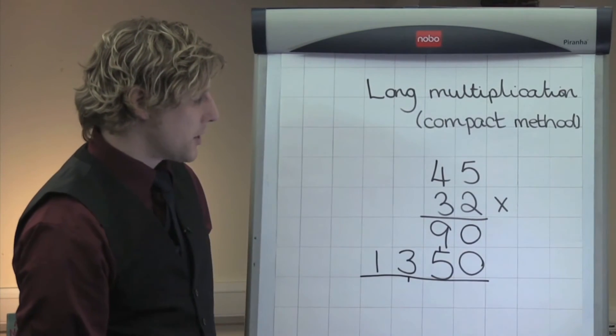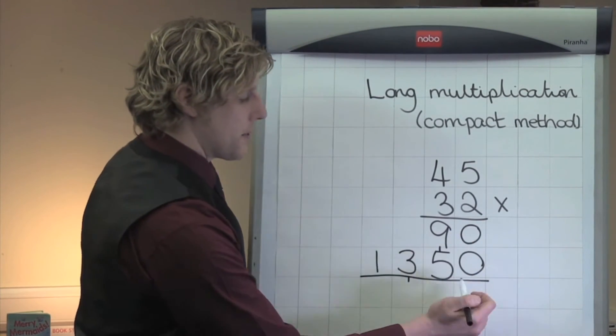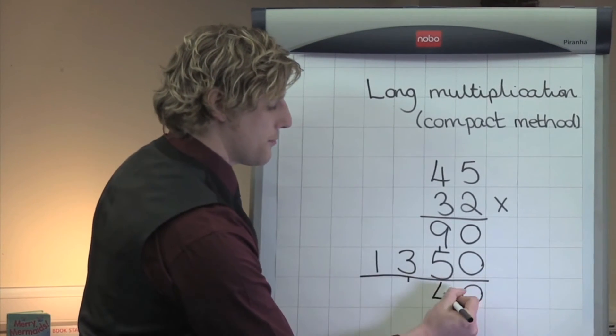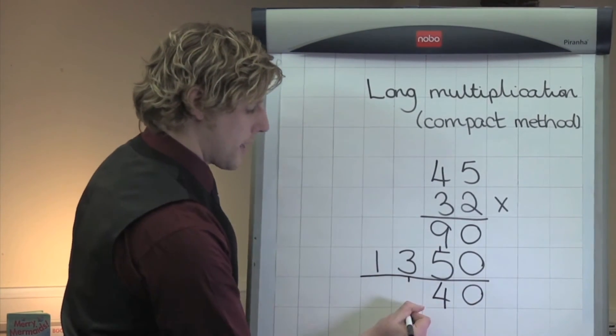Finally, I just need to add my two numbers together. 0 plus 0 is 0. 9 plus 5 is 14. I write my 4 and carry my 1 across.